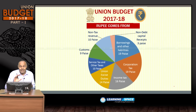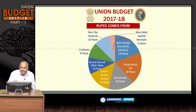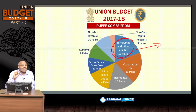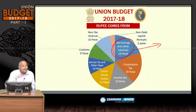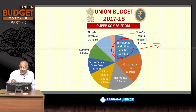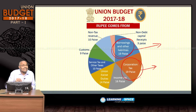Looking at how the rupee comes: borrowings and other liabilities account for 19 paise — that is the fiscal deficit or debt capital receipts. Corporation tax is also 19 paise — the highest among all taxes. Then comes income tax, then excise duties. Corporation tax and income tax are direct taxes; excise duties, service tax, and customs are indirect taxes.